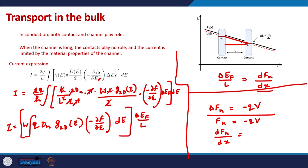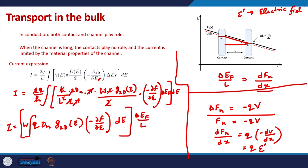The gradient of the quasi Fermi level can be written as q × (−dV/dx). This is essentially the electric field applied across the device, represented as E′. So dF_n/dx is essentially q × E′, where E′ is the electric field across the bulk conductor.